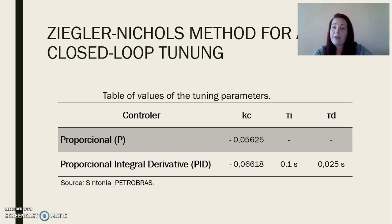Through the values of Ku and Pu, the parameters Kc, tau i, and tau d were calculated for the P and PID controls presented in the table.